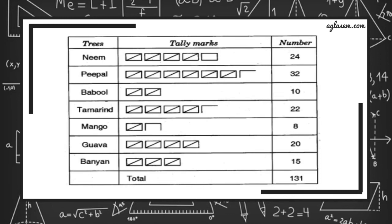Number of neem tree we have 24, peepal tree 32, babool trees 10, tamarind tree 22, mango tree 8, guava tree 20, whereas number of banyan tree we have 15. So, total number of trees are 131.